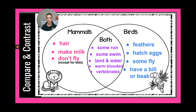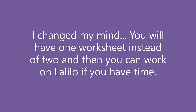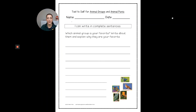That's a lot — if you can fill all of this out, I'd love to see it; have your parents send it to me. After this, you'll work on comprehension worksheets about the text. First graders, you'll have one worksheet instead of two, then work on the Lilo if you have extra time. Finally, write two sentences: one about your favorite animal group and one explaining why. Those are your two assignments — see you tomorrow!